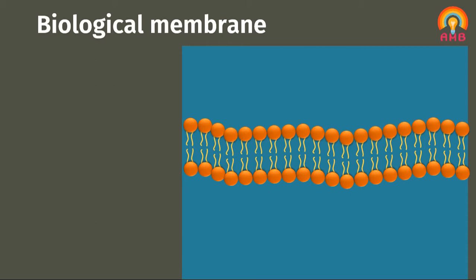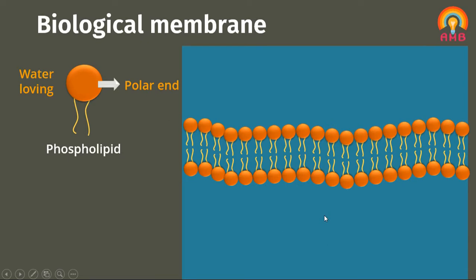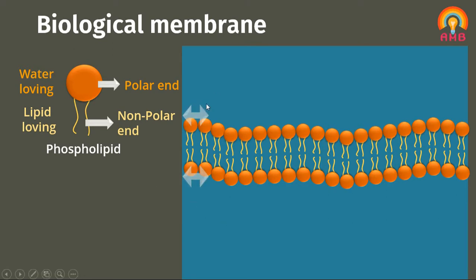Biological membrane is also called as cell membrane or cell wall. It is made up of a bilayer of phospholipids and cholesterol molecules. Phospholipids have two groups: a polar end which is the water-loving portion, and a non-polar end which is the lipid or oil-loving portion. The polar groups are oriented at the two surfaces, and the non-polar, lipid-loving hydrocarbon chains are embedded in the matrix of the cell membrane.